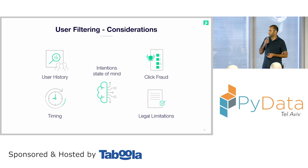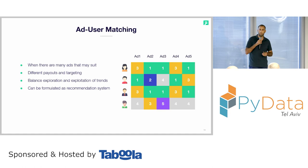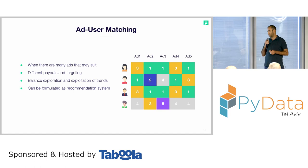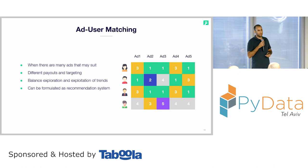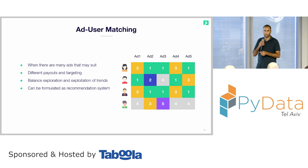The second challenge a bidder faces is ad-user matching. In simple words, we have tons of advertisements and tons of users, and we should match between both. Since there are many ads, each one has its own behavior — targeting, pricing, etc. The main goal is to balance between exploration and exploitation of trends. This can be formulated as a recommendation system — Taboola and some other companies are doing such things.